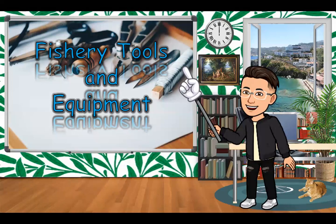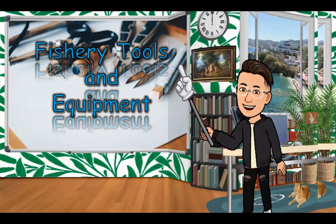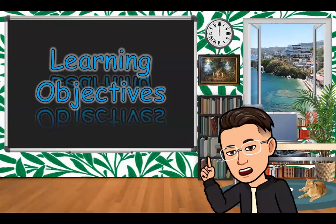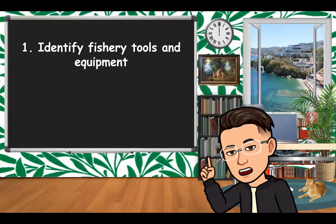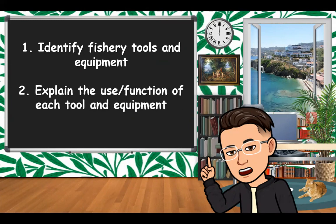This lesson provides information about common tools, instruments, and equipment used in aquaculture, explains their functions, and how to properly care for them. For our learning objectives: number one, you will learn to identify the different fishery tools and equipment; and number two, you can explain the use and functions of each tool and equipment.